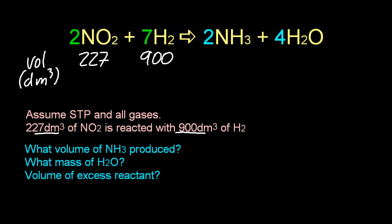Excess and limiting. The volume divided by the coefficient. What's the lowest number? The lowest is limiting. So nitrogen dioxide is limiting. And so that's the number that I need. 900 is too much. It's excess. Cross it out.